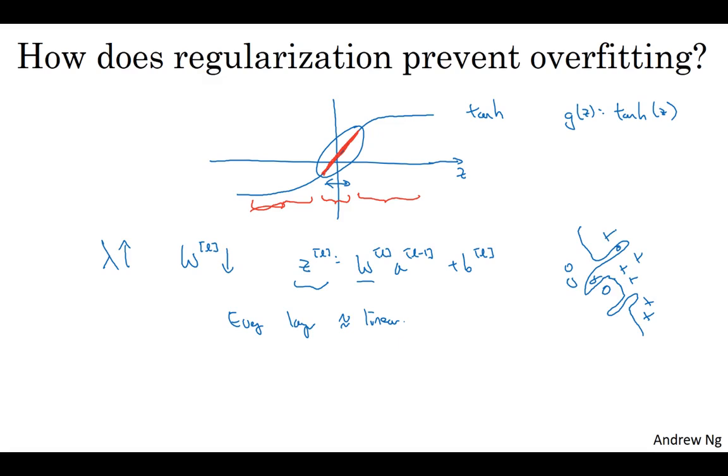So just to summarize, if the regularization parameter is very large, the parameter W is very small. So z will be relatively small, kind of ignoring the effects of B for now. But so z is relatively, so z will be relatively small or really, we should say it takes on a small range of values. And so the activation function, if it's tanh, will be relatively linear.